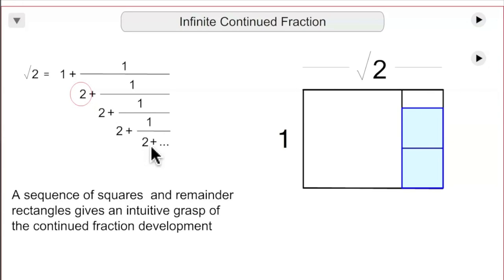In the case of this continued fraction, this square root, you always get the same dimensions of the remainder rectangle from here on in. And it goes on like that forever.